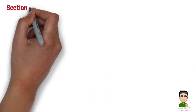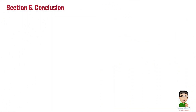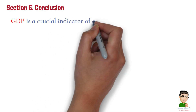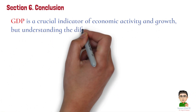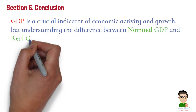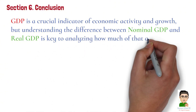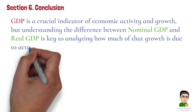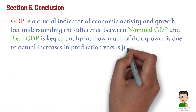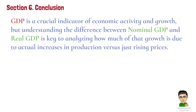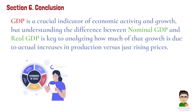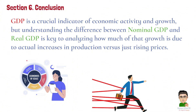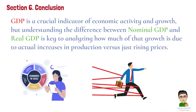Section 6: Conclusion. To wrap up, GDP is a crucial indicator of economic activity and growth, but understanding the difference between nominal GDP and real GDP is key to analyzing how much of that growth is due to actual increases in production versus just rising prices. Although GDP helps us measure the size of an economy, it also has limitations in terms of addressing income inequality, environmental impact, and quality of life.